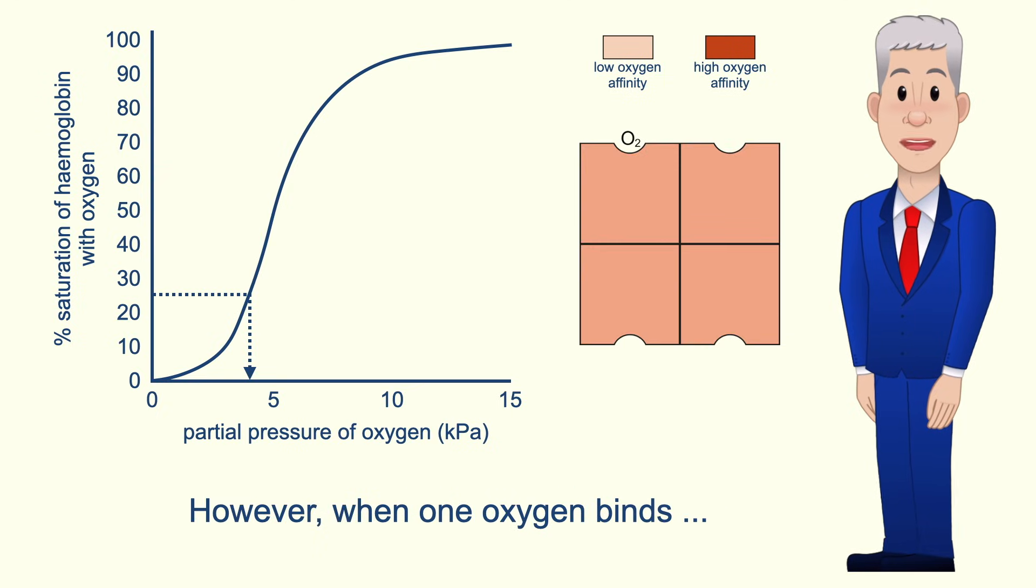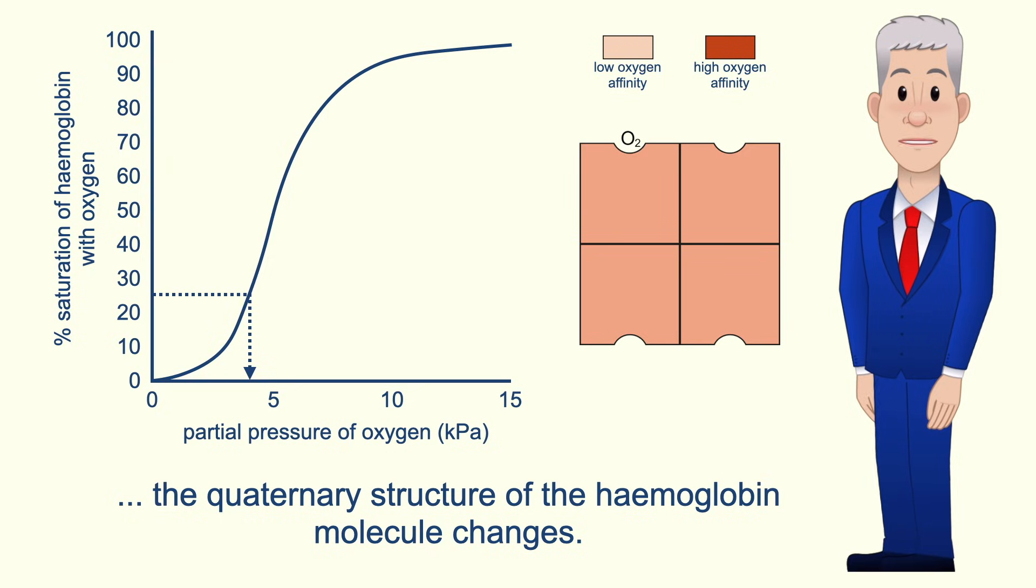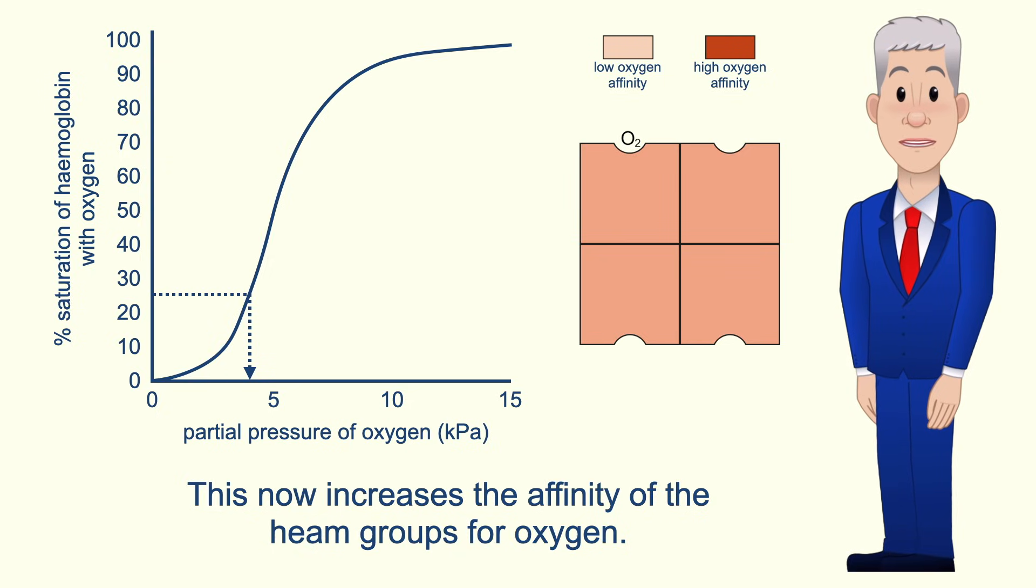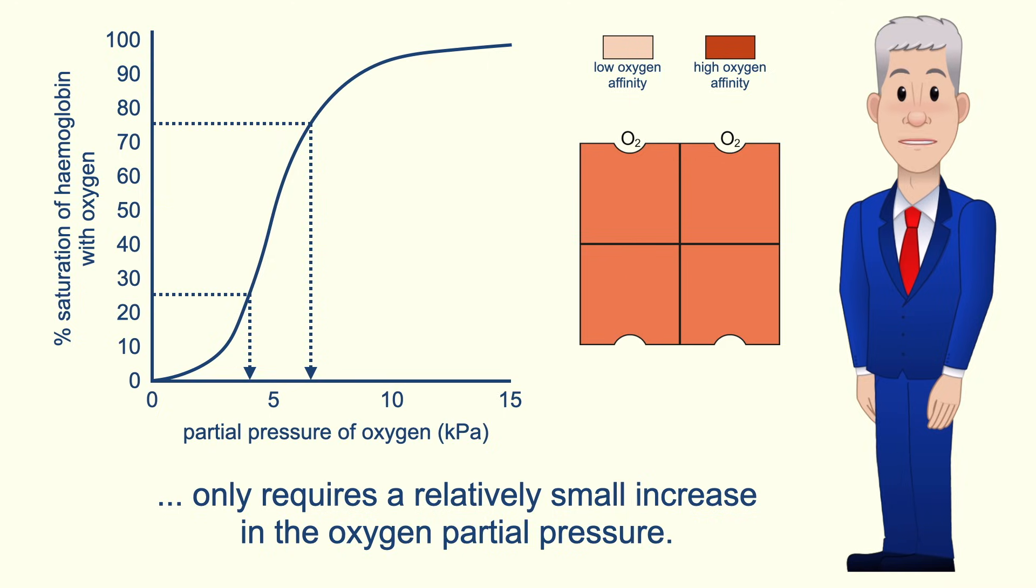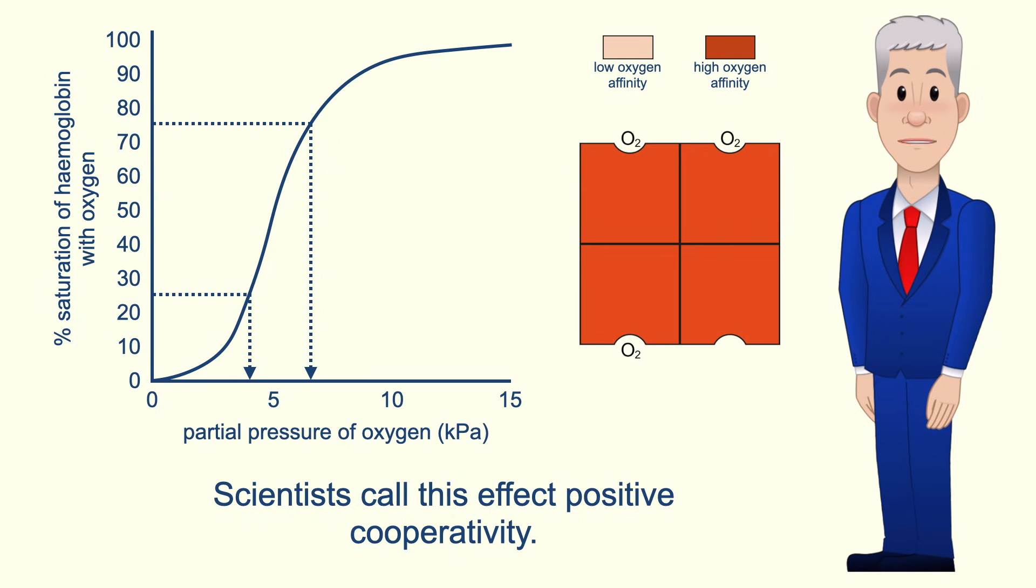However, when one oxygen binds, the quaternary structure of the haemoglobin molecule changes and this now increases the affinity of the haem groups for oxygen. So binding more oxygen molecules only requires a relatively small increase in the oxygen partial pressure. Scientists call this effect positive cooperativity.